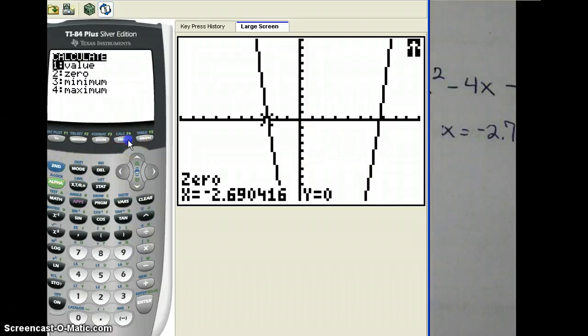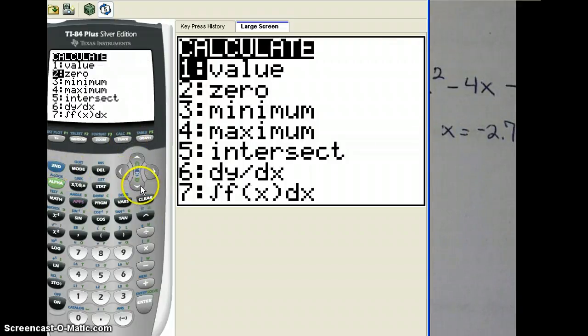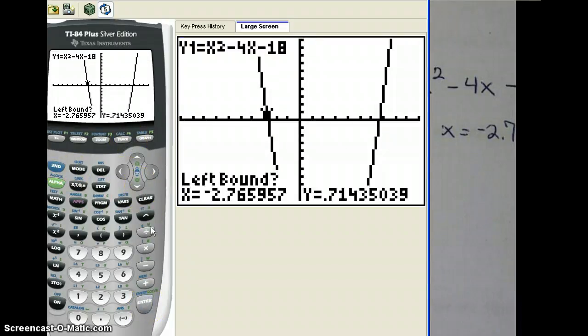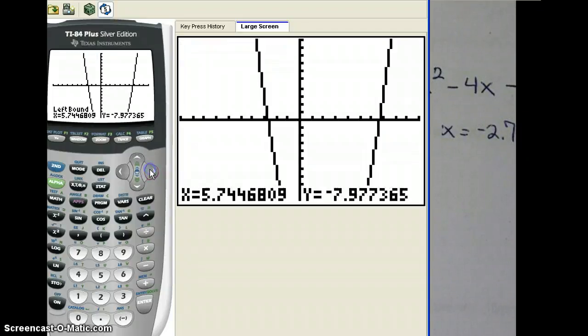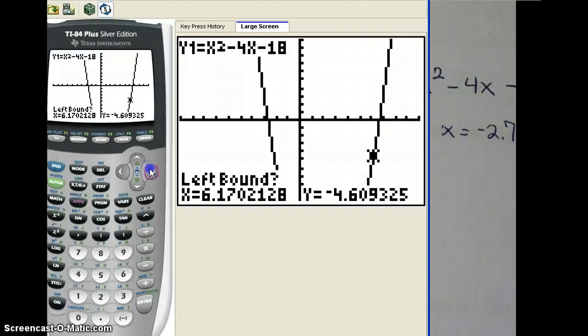Second, trace. Zero. Okay. Arrowing over to the other solution. Getting closer here. Don't push too fast. Okay. Left bound.